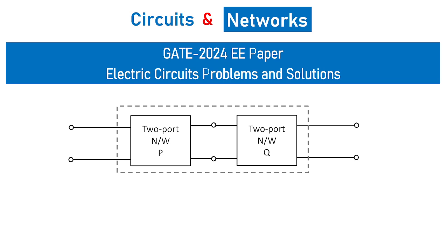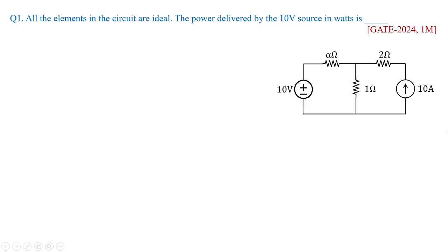Apart from this we also see some of the basic numericals such as first example you can see a circuit is given over here. All the elements in the circuits are ideal. The power delivered by 10 volt source in watts is. This was asked for one mark and the options were given like this ABCD: 100, 0, depending upon the value of alpha, and 50. So how to solve this kind of problem.